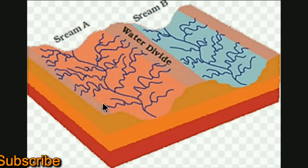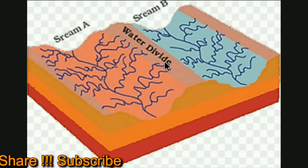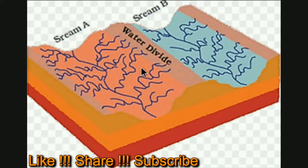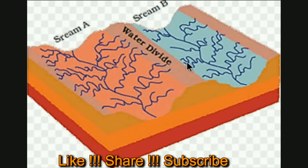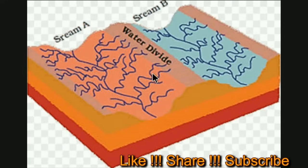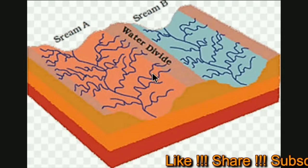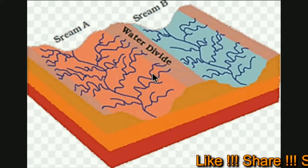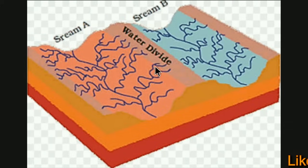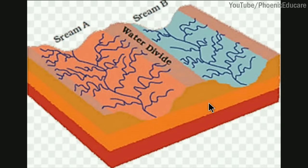This model shows how a mountain divides water flow — rivers flow on either side. This is called a water divide. There are various mountains in India like the Aravali, Western Ghats, Eastern Ghats, and Vindhya mountains that act as water divides. The Vindhya mountains send some rivers one way and some another; the Western Ghats do the same.